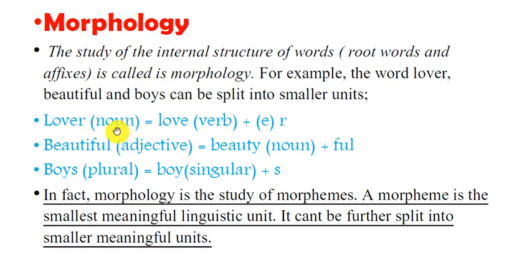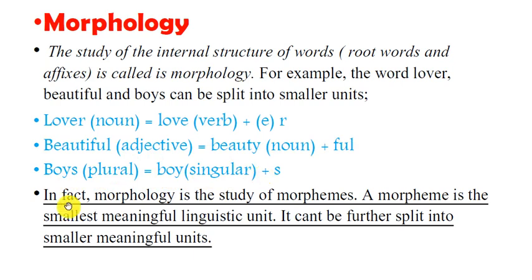For example, 'lover': 'love' is a verb and '-er' is a suffix. 'Beautiful': 'beauty' is a noun plus '-ful.' 'Boys': the singular 'boy' plus '-s' for plural. In fact, morphology is the study of morphemes. A morpheme is the smallest meaningful linguistic unit — it cannot be further split into smaller meaningful units.